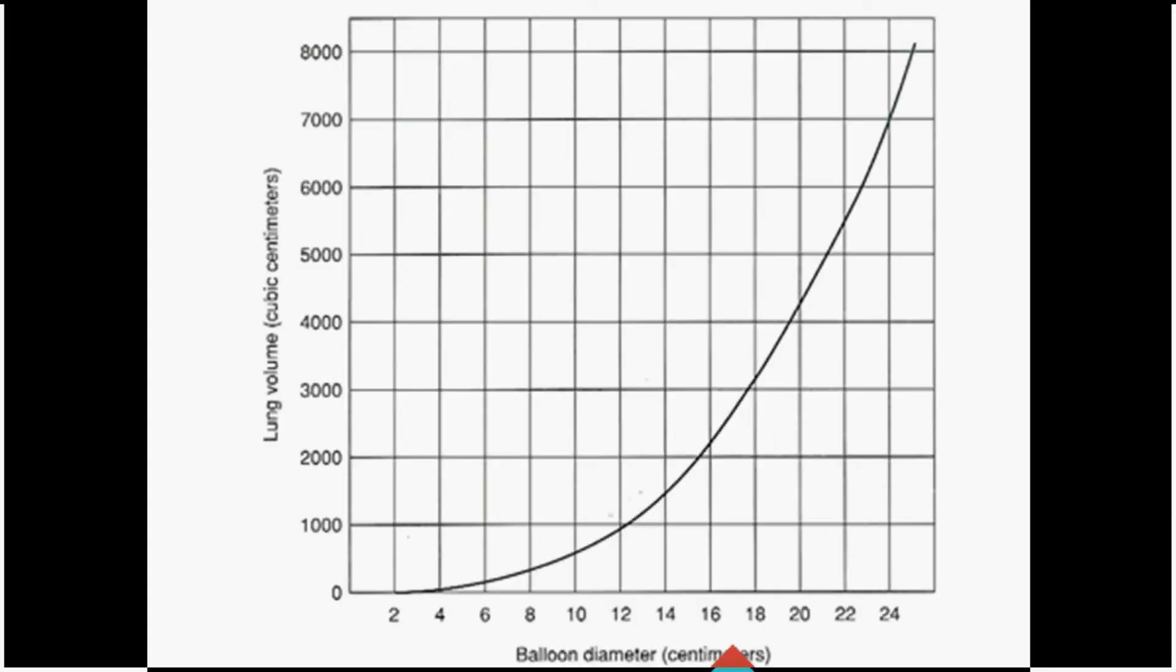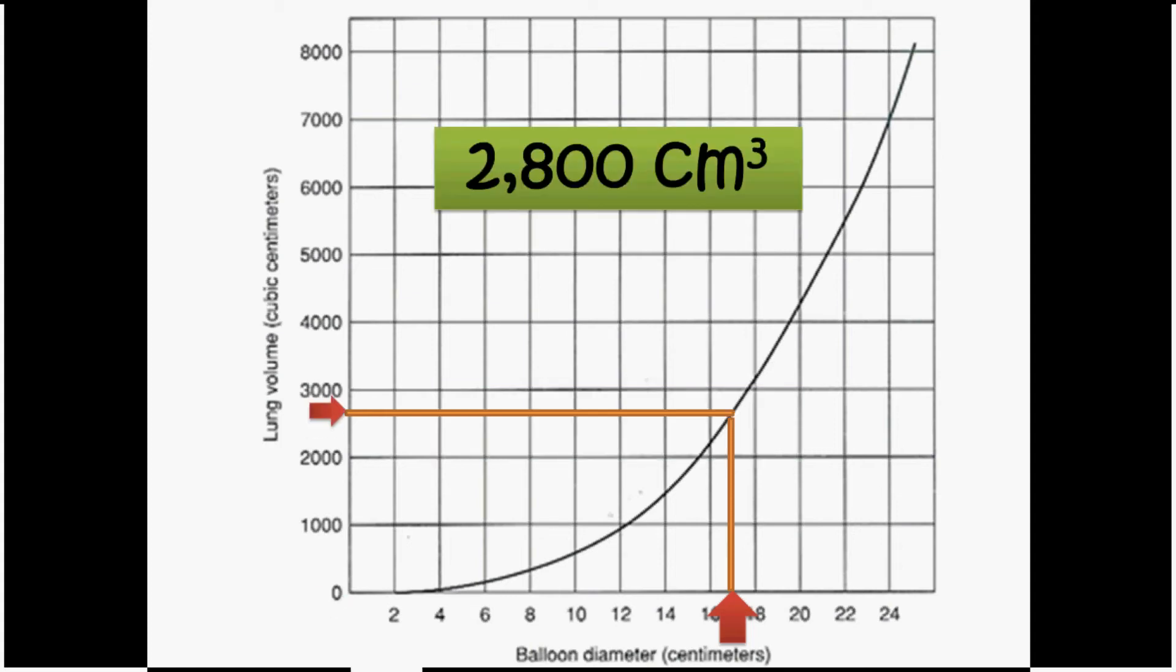My best diameter was 17 centimeters. And I'm going to use this graph to figure out what my actual lung volume is. So if it's 17, and I follow that line up to the curve, and I go to the left, where it shows lung volume, that's around between 2,000 and 3,000, about 2,800 cubic centimeters.